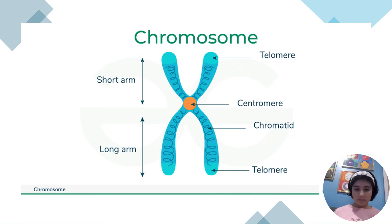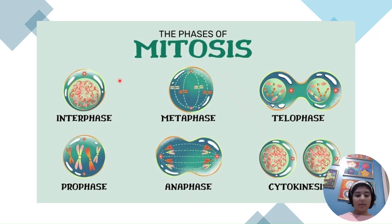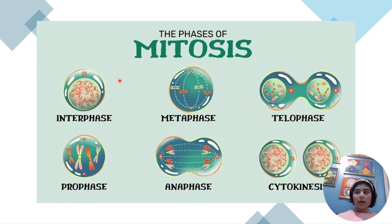In both mitosis and meiosis, the starting phase is interphase. Interphase is where the cell spends 90% of its time in the cell cycle — it's where the cell grows and replicates its DNA. Replicating DNA is important before entering mitosis or meiosis, because both are processes of dividing cells and the cells need their DNA replicated first.